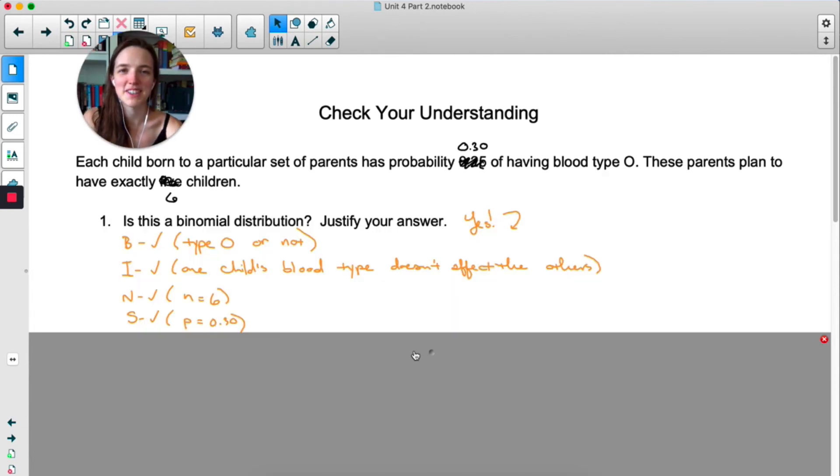Not surprisingly, we have a binomial distribution here. For whatever reason, this set of parents thinks that type O blood is a success and everything else is a failure. It's a little harsh. Independent, one child's blood type doesn't affect the others. I'm pretty sure that that is true, that the new child to be born doesn't know what the other children's blood types were, so the other kids don't influence the new kid.